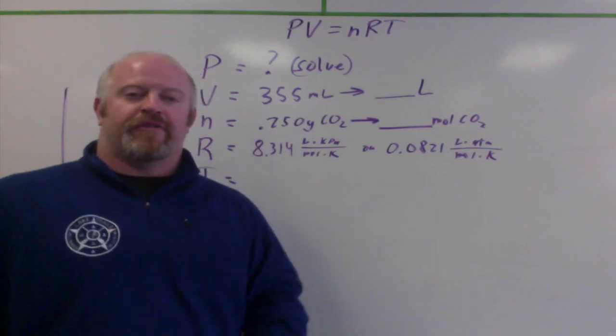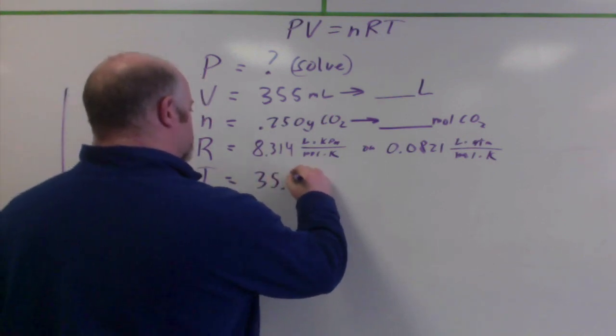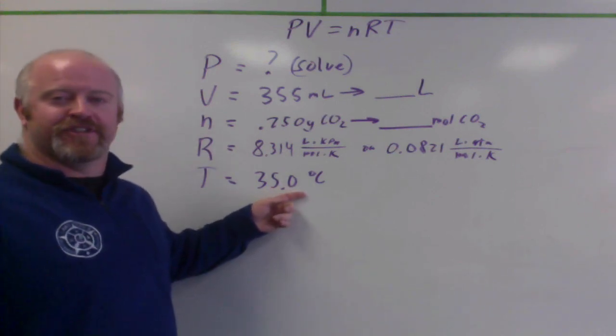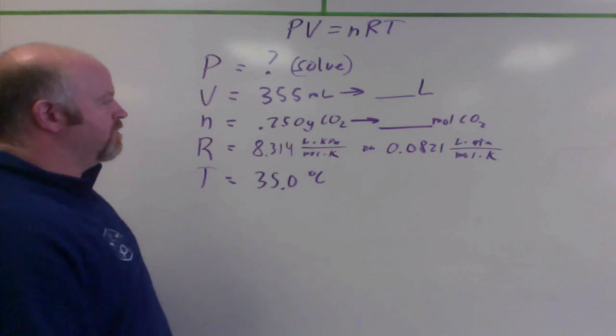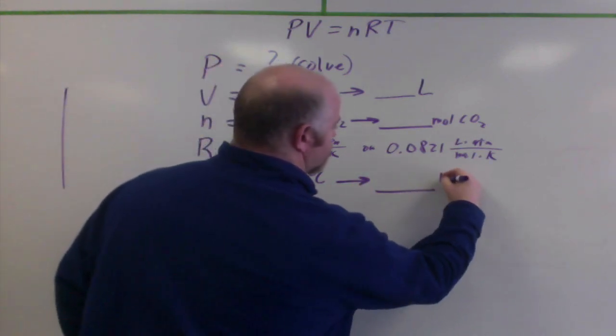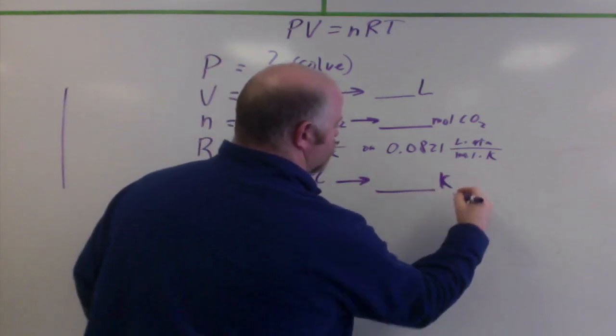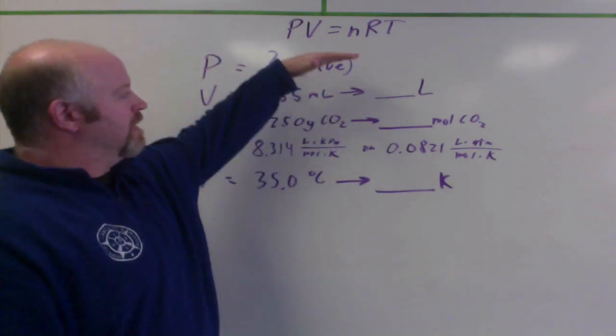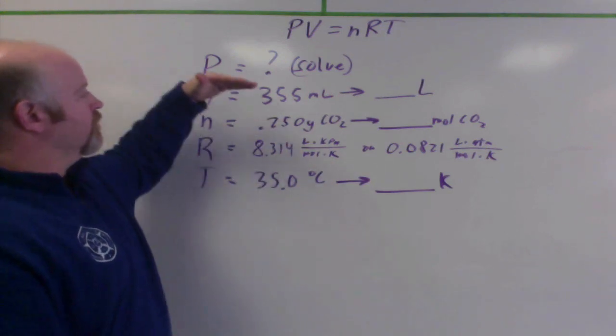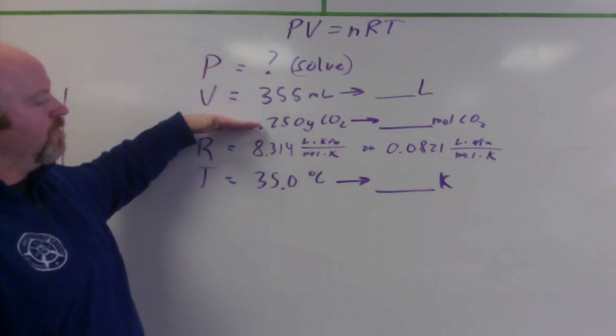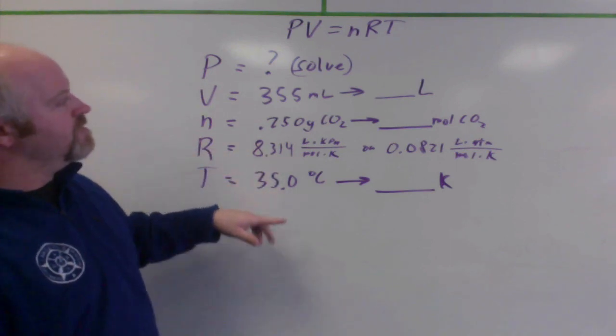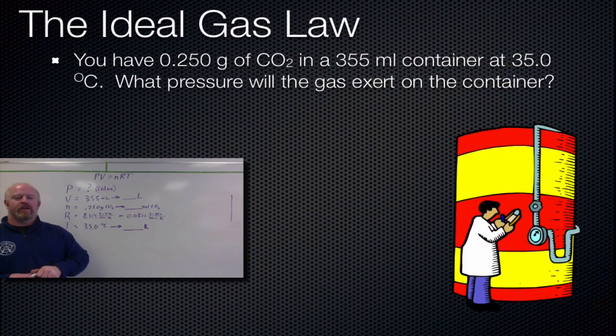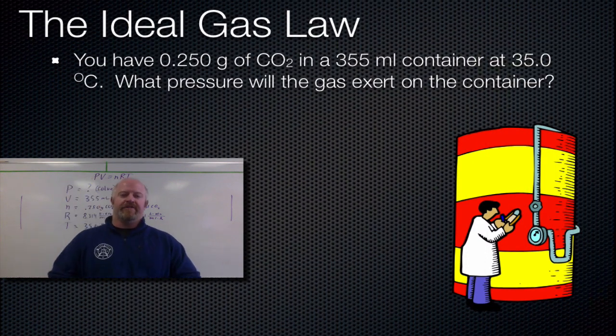And then finally, temperature. Well, we have 35 degrees Celsius, so that's an easy one. Right? Oh, no, it isn't. We can't use Celsius because we can't have negatives. So you can't use Celsius, so you have to convert this to Kelvins. So on the surface, the problem is going to be pretty straightforward, but you have to do a lot of work ahead of time to get to the right units. Convert this to liters. Convert this to moles. Pick one of these two. Convert this to Kelvins. And then now you can substitute back in to your ideal gas law constant. So go ahead and do that on your own, and then we'll reconvene, and I'll show you the answer key.